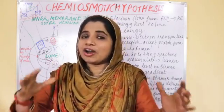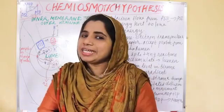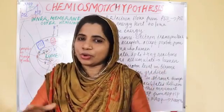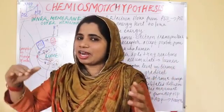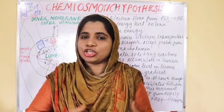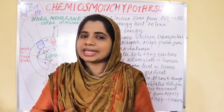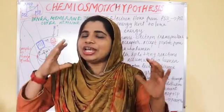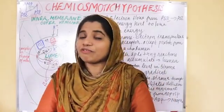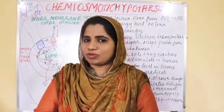It is called light reaction. Light reaction is called thylakoids. It is called thylakoids and a chemiosmotic hypothesis. The treatment is called cyclic photophosphorylation. The solution is called cyclic photophosphorylation and non-cyclic photophosphorylation.